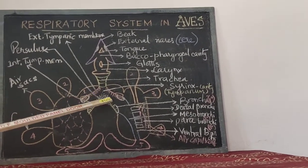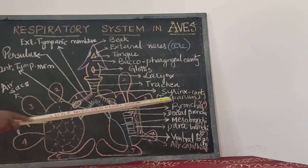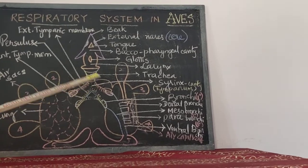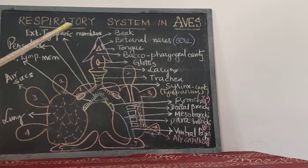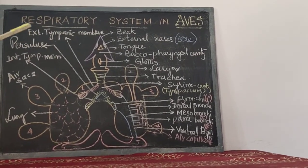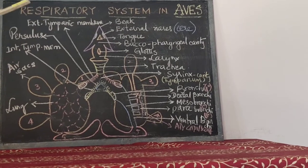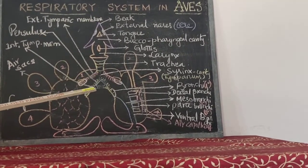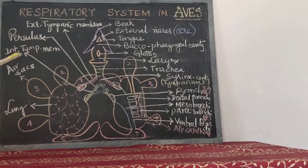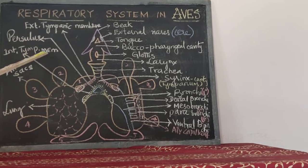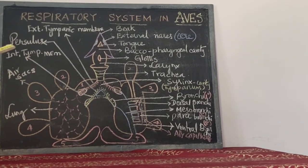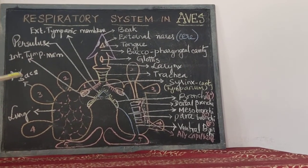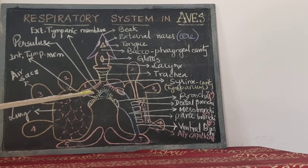The cavity of the syrinx is called the tympanum. The outer membranous structure is called the external tympanic membrane, also referred to as membrana semilunaris. The inner membrane is called the internal tympanic membrane, also called membrana infundibuliformis.